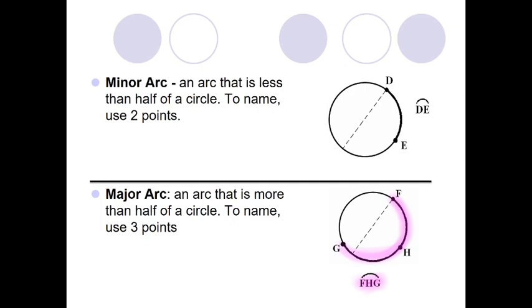But if I wanted to just refer to the red part right here, then we could call that arc FG. So we have the minor arc FG and the major arc FHG.